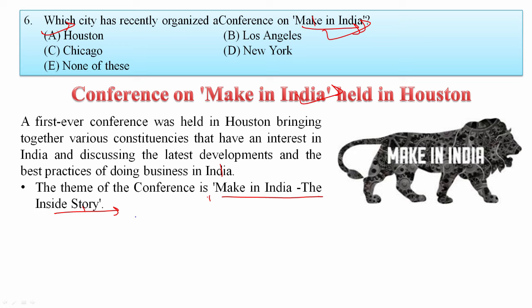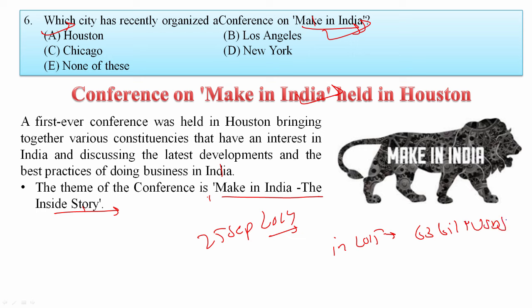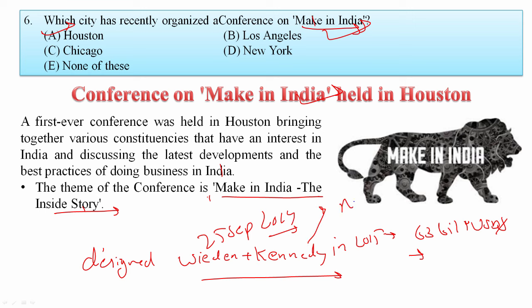Make in India was launched by PM Modi on 25th September 2014. After that, India emerged as a top destination globally for FDI, surpassing the US and China too. In 2015, India received FDI of nearly 63 billion USD. This campaign was designed by American advertising company Wieden+Kennedy, which also helped Nike boost their campaign. Your answer is A.